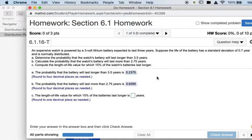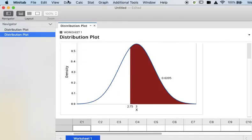Part C is a little bit different. Now I want to compute the length of life value for which 15% of the watch's batteries last longer. This time, instead of giving me the X value, they're giving me the percentage or the probability or the proportion. So what I need to do is go back to Minitab.